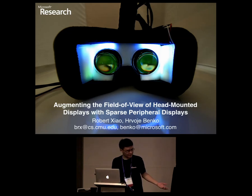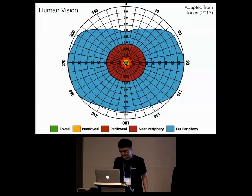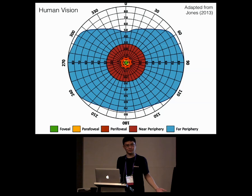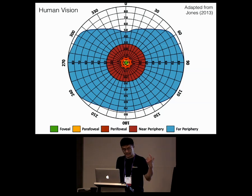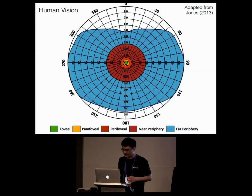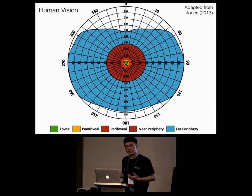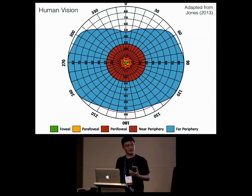I'd like to talk today about field of view. This is a diagram of the binocular field of view of the human visual system, from Jones's aluminium paper. In the middle, combining the green, yellow, and orange areas, is the foveal area — the part that senses detail and color. On the outside, the red and blue areas, that's the peripheral vision, which gives you context, motion, and notification. The peripheral vision serves very different functions from the foveal area and has a lot less spatial resolution.